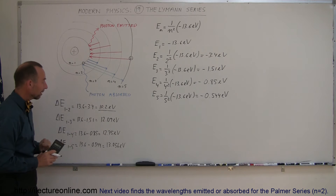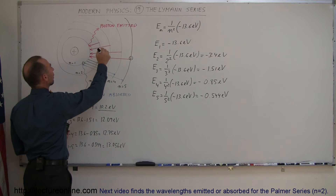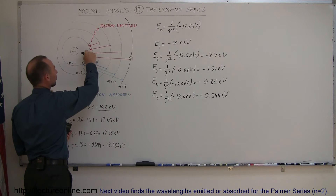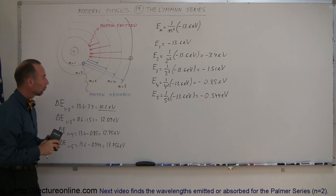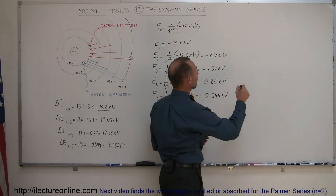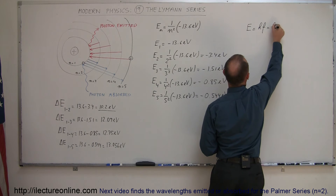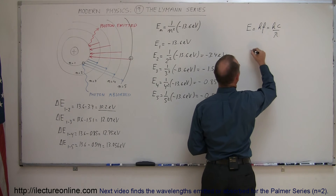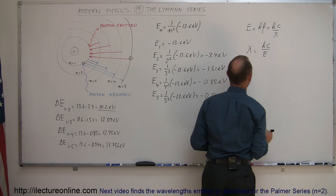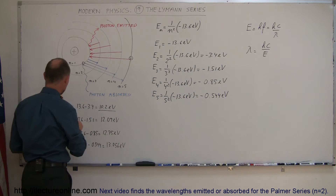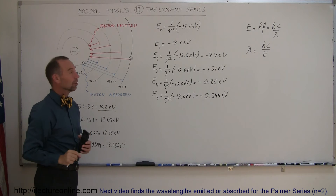So that's the difference between those various levels. Now let's calculate the wavelength of the photon in each case — when it jumps from the second down to the first, from the third down to the first, from the fourth down to the first, and from the fifth down to the first. Going back to the equation, the energy of a photon equals h times the frequency, which equals h times c over lambda. From this, lambda equals h times c divided by the energy, allowing us to calculate the wavelength of the emitted photon from that energy difference.